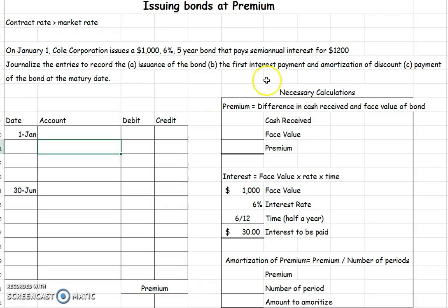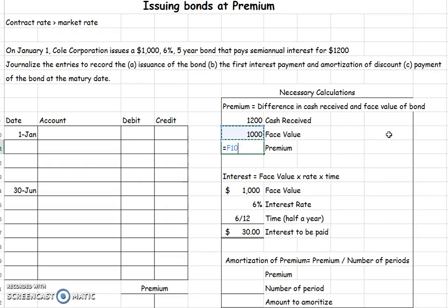So that tells us it's at a premium. How do we find out what our premium is? We compare our cash received — we got $1,200 — to our face value, which is $1,000. Because our cash received is greater than our face value, the difference is our $200 premium. So let's put it into the journal entry. We issue bonds because we want to borrow money, so we record our cash of $1,200.